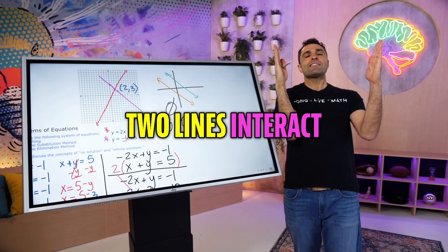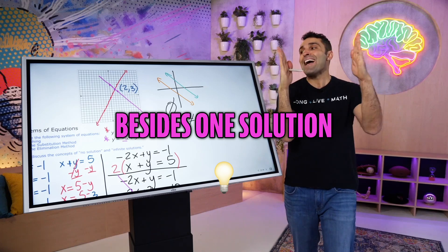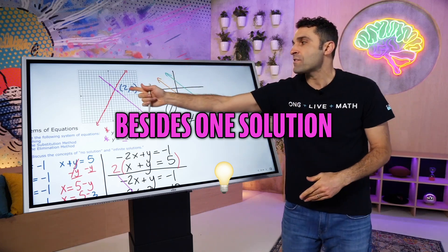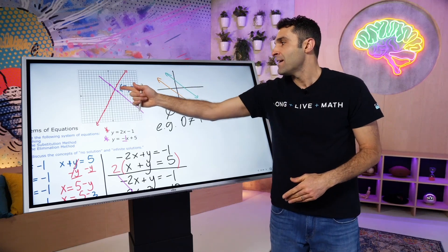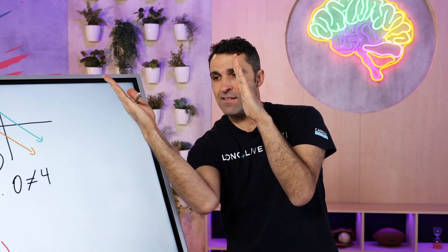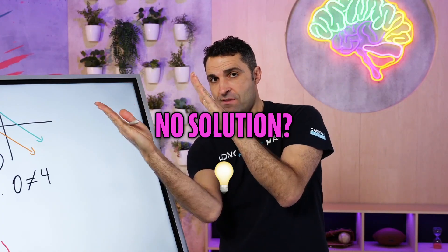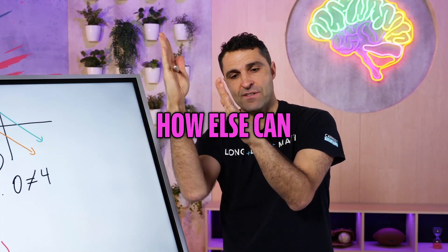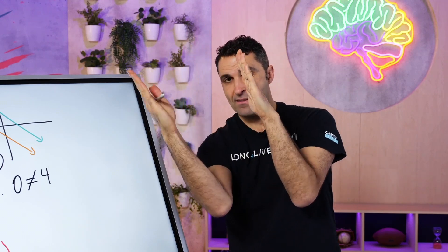How else can two lines interact besides one solution? And besides no solution, how else can two lines interact?